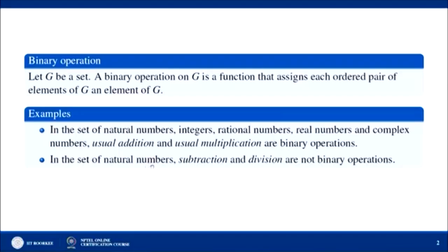If you take subtraction over the set of natural numbers — say 1 minus 2 equals minus 1, which is not a natural number — so subtraction over the set of natural numbers is not a binary operation. Similarly for division: 2 divided by 3 is not a natural number. So binary operation is an operation which, when applied to any two elements of set G, gives a resultant element in the same set.